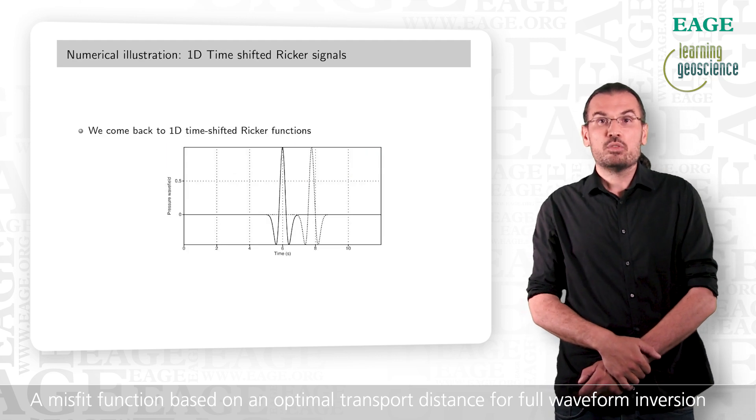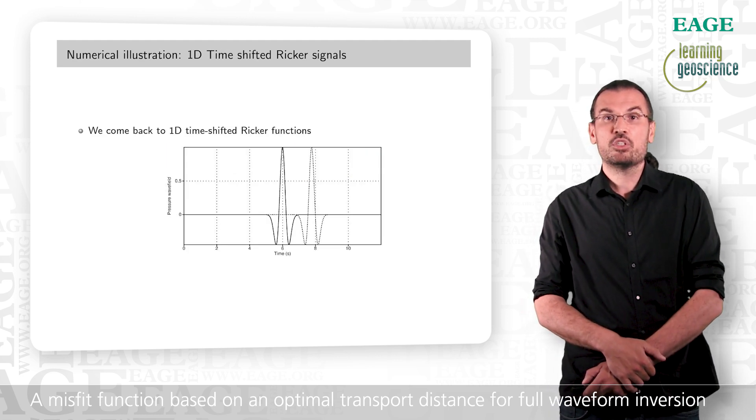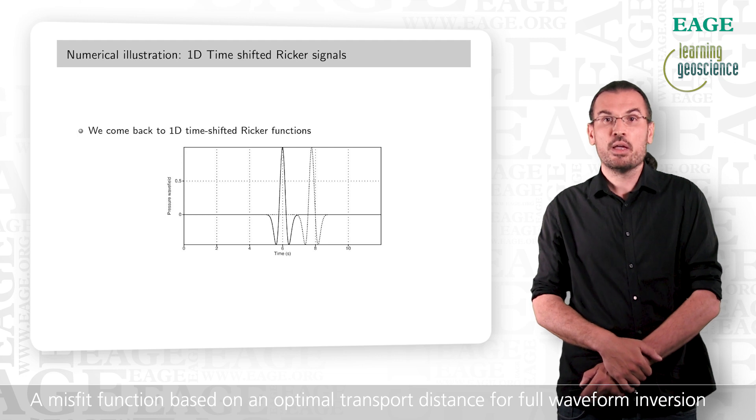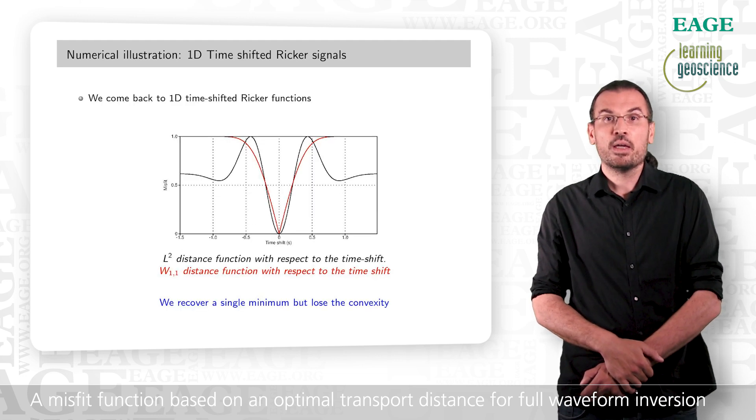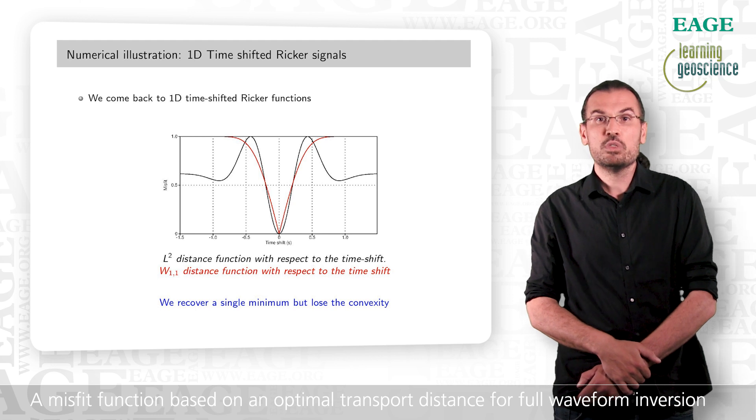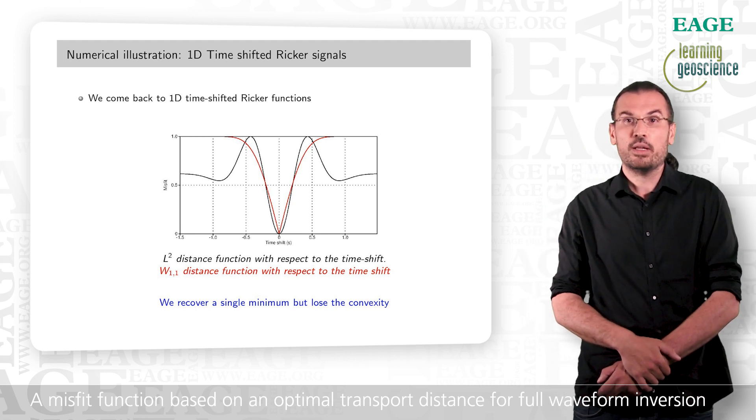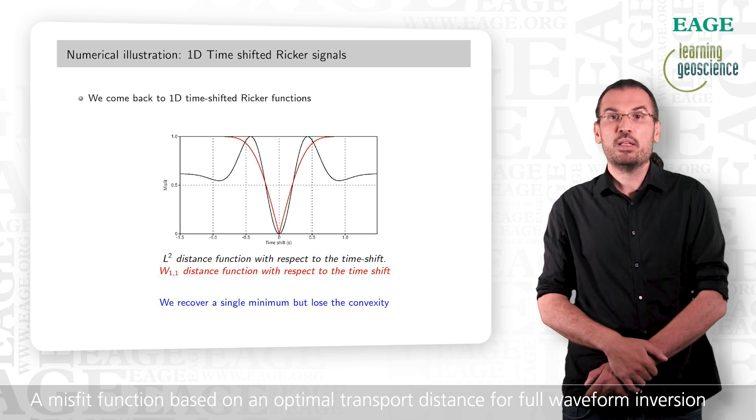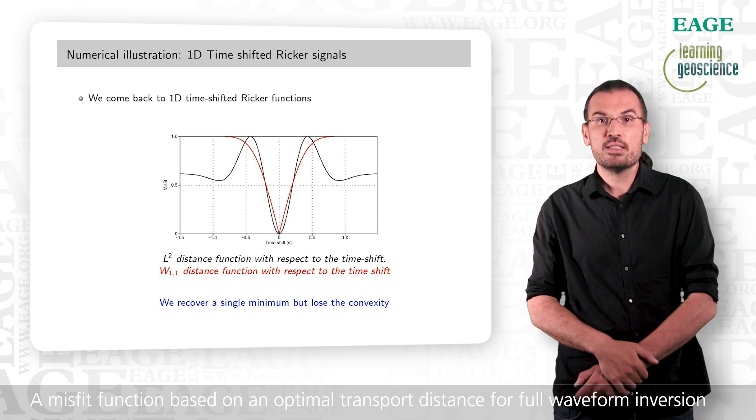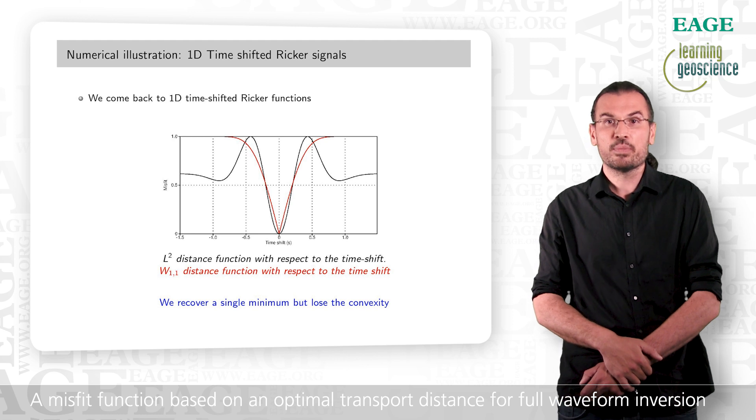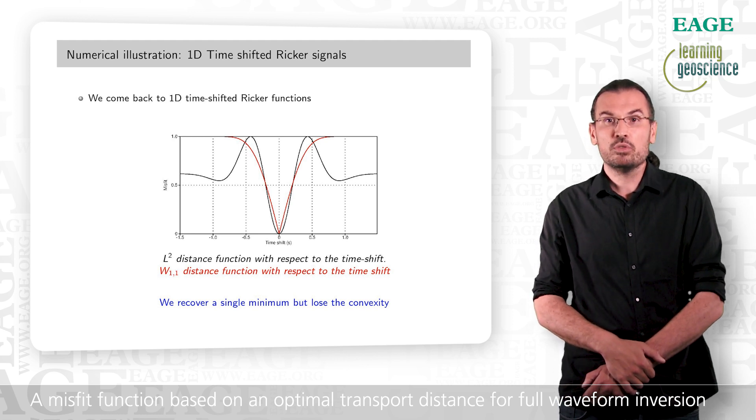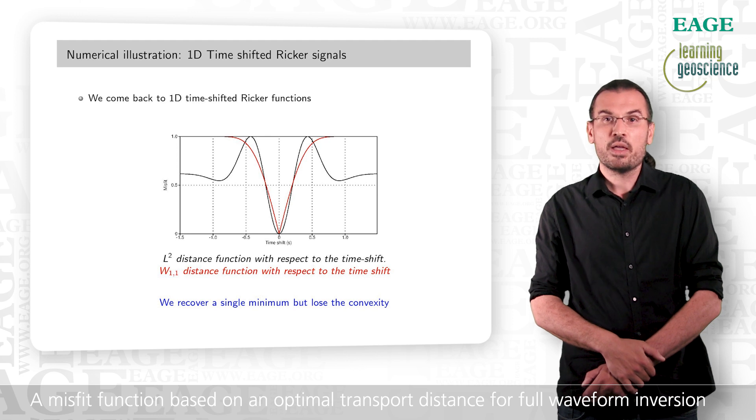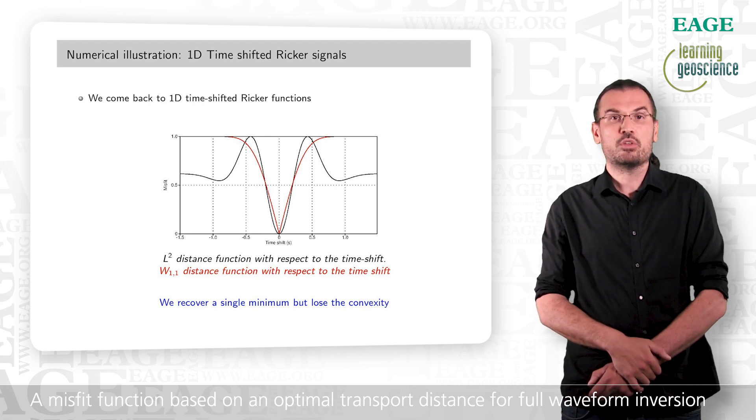Now if we come back to the initial example we had on the shifted-in-time recur signal, this is what we obtain. In black, the L2 misfit depending on the time shift, and in red, the optimal transport misfit depending on the time shift. So we can see that we recover a single minimum, even if it seems that we lose the convexity at the minimum, it seems not differentiable, and close from an L1 misfit function.